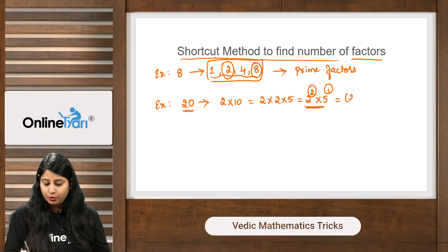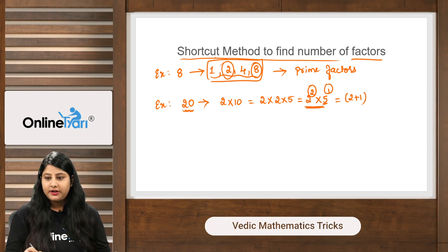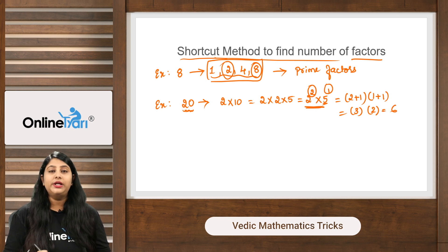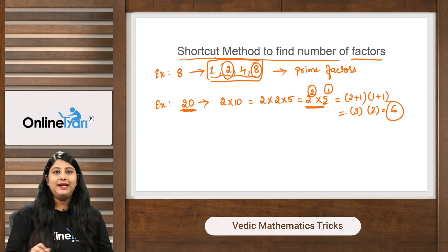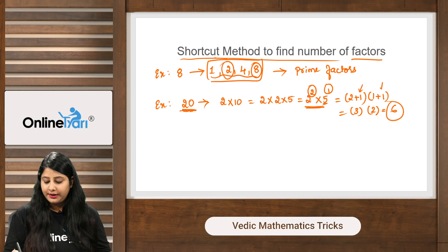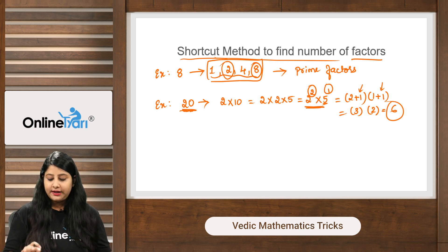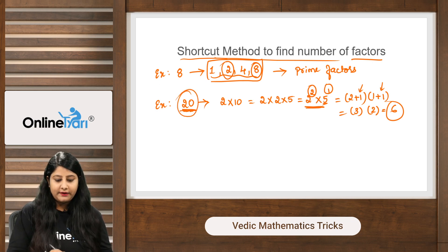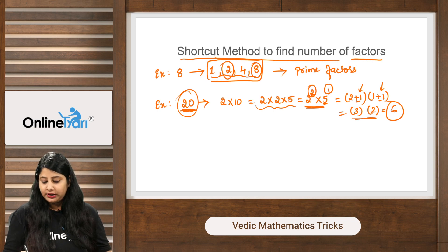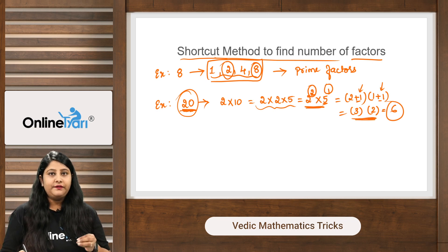Once you convert the number into prime factor form, observe the powers. The power of 2 is 2 — add 1 to get 3. The power of 5 is 1 — add 1 to get 2. Now multiply: 3 × 2 = 6. So 20 has 6 total factors. The technique: convert to prime factor form, add 1 to each power, then multiply — the product is the total number of factors.